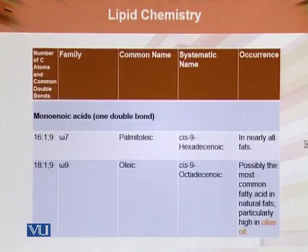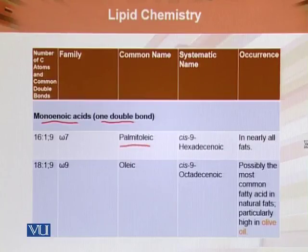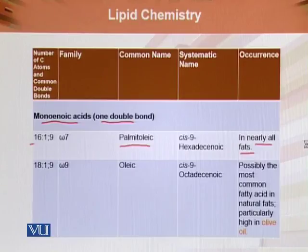The first monoenoic acid, having one double bond, is palmitoleic acid. Palmitoleic acid is present in nearly all fats. It is a 16-carbon compound with one double bond at the ninth position, and it is an omega-7 fatty acid.